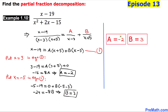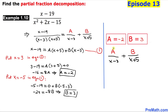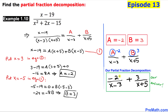So our A value turns out to be negative 2 and B value is 3. Therefore in our partial fraction decomposition, wherever we see A we replace it by negative 2, and wherever we see B that is replaced by 3. Here is our final answer. Thanks for watching and please don't forget to subscribe to my channel for more exciting videos.